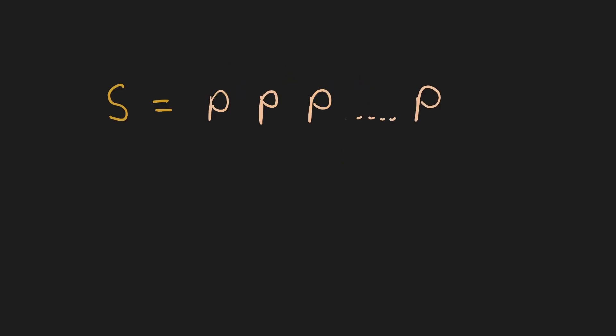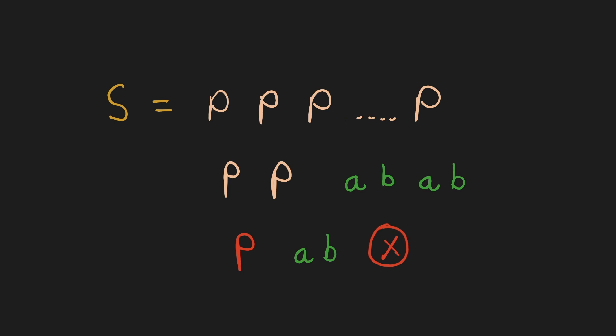One thing you can observe is that for any valid string it will have a repeating pattern which when added multiple times will result in the original string. Hence the original string can be written as the concatenation of the repeating pattern. Also, the repeating pattern will at least be repeated twice. For example if AB is the repeating pattern there will be at least two instances of it. If the pattern is repeated only once, that pattern itself is the original string and no substring added to itself can result in the original string.